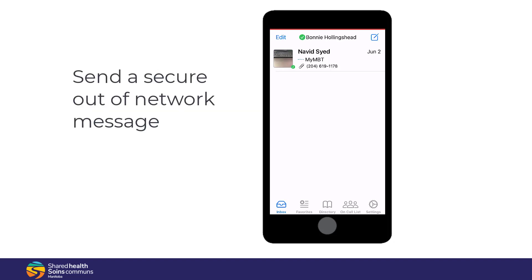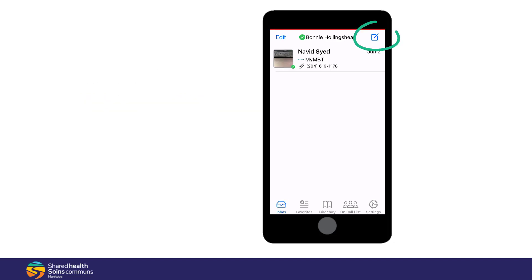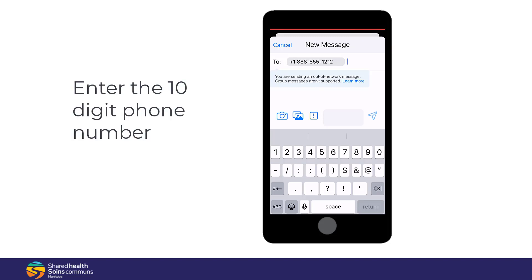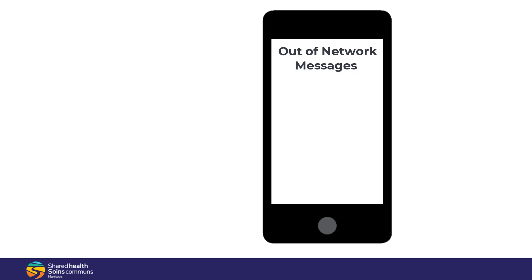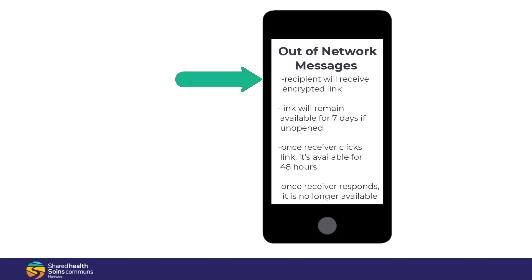To send a secure out-of-network message, tap New Message, enter the 10-digit phone number, type your message and tap Send. The recipient will receive an encrypted link to access the message securely. The link will remain available for seven days if it remains unopened.